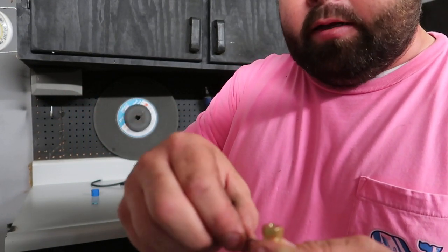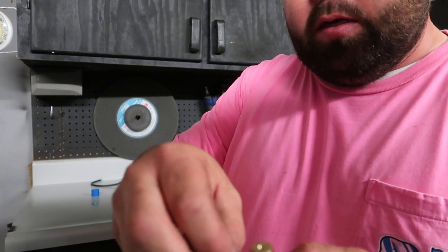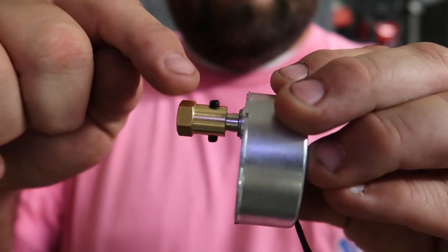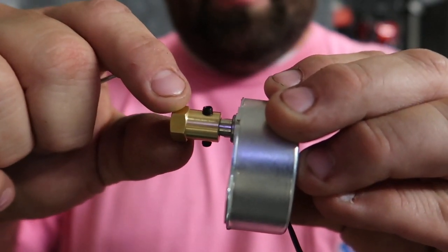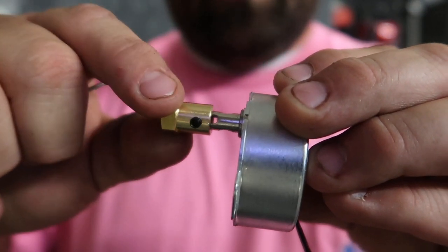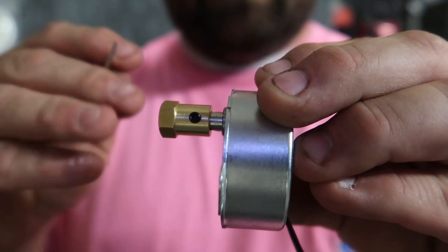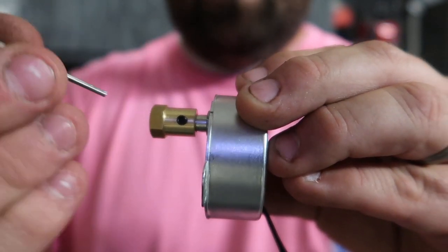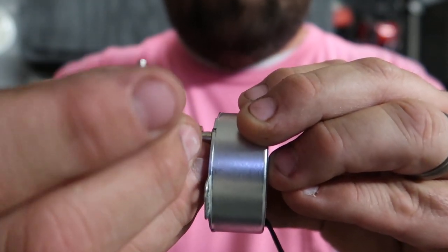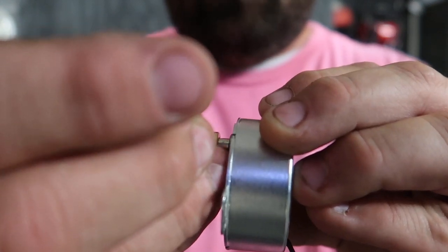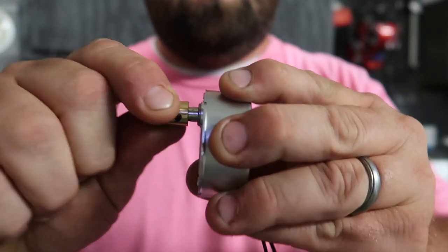So now you can see the set screws are into the adapter and the adapter can slide over the shaft of the motor just fine. Next step is go ahead and tighten up the set screws here so the adapter will not move over the motor. That's not going nowhere.